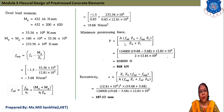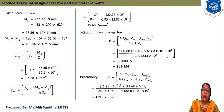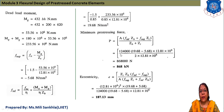The minimum prestressing force P = A · (f_inf·Z_b + f_sup·Z_t) / (Z_b + Z_t). Substituting all the values found, we get P = 868,000 N = 868 kN.